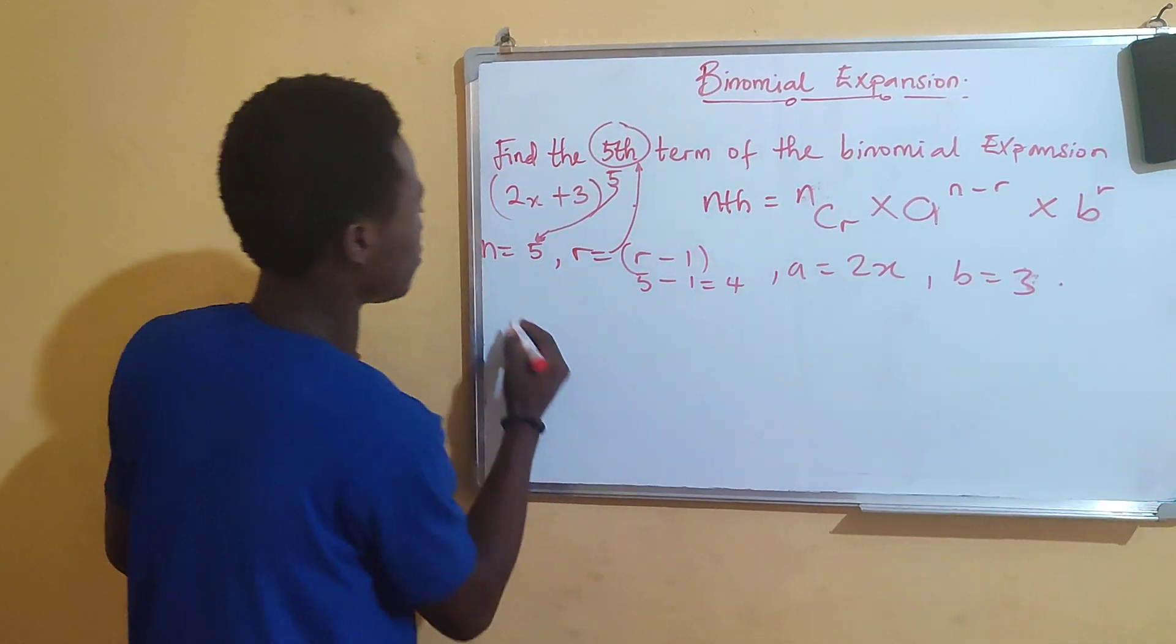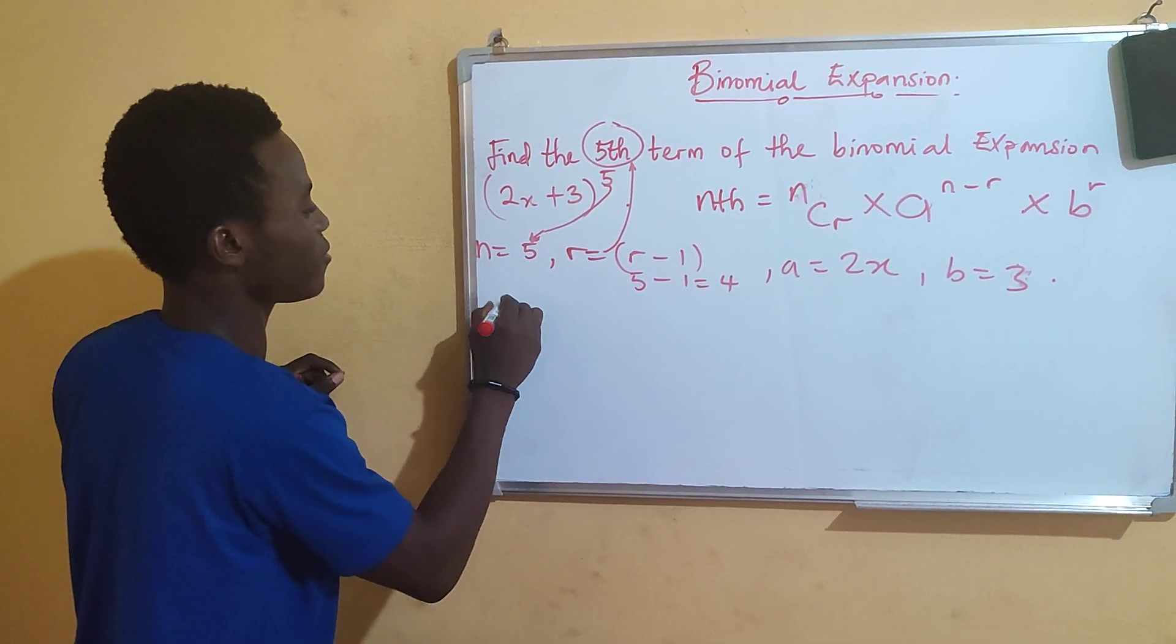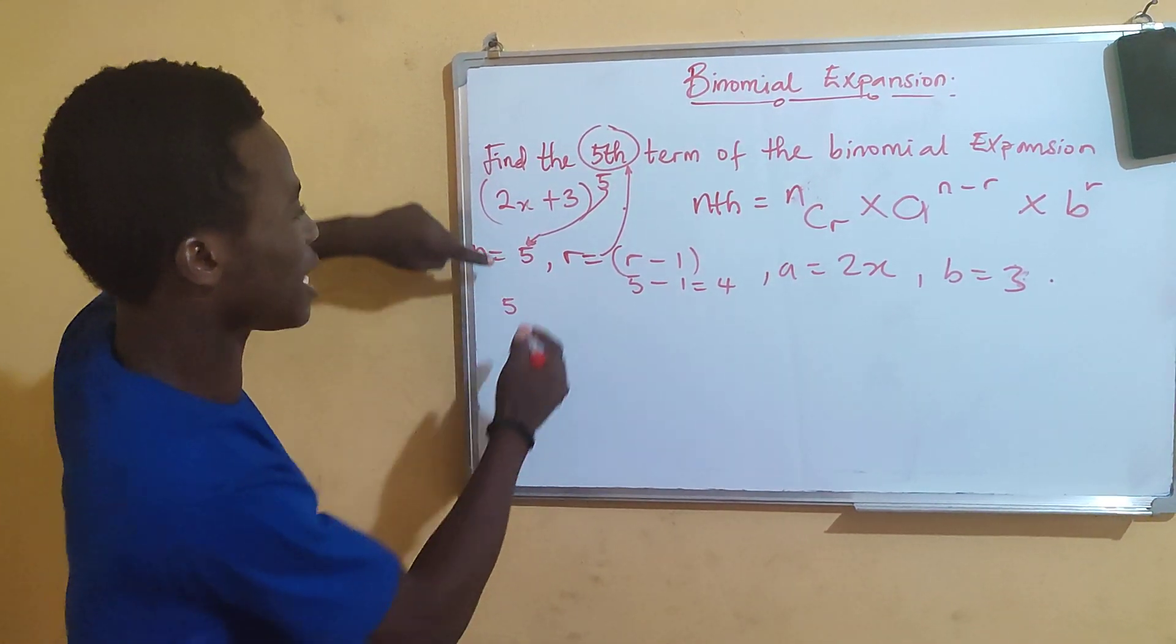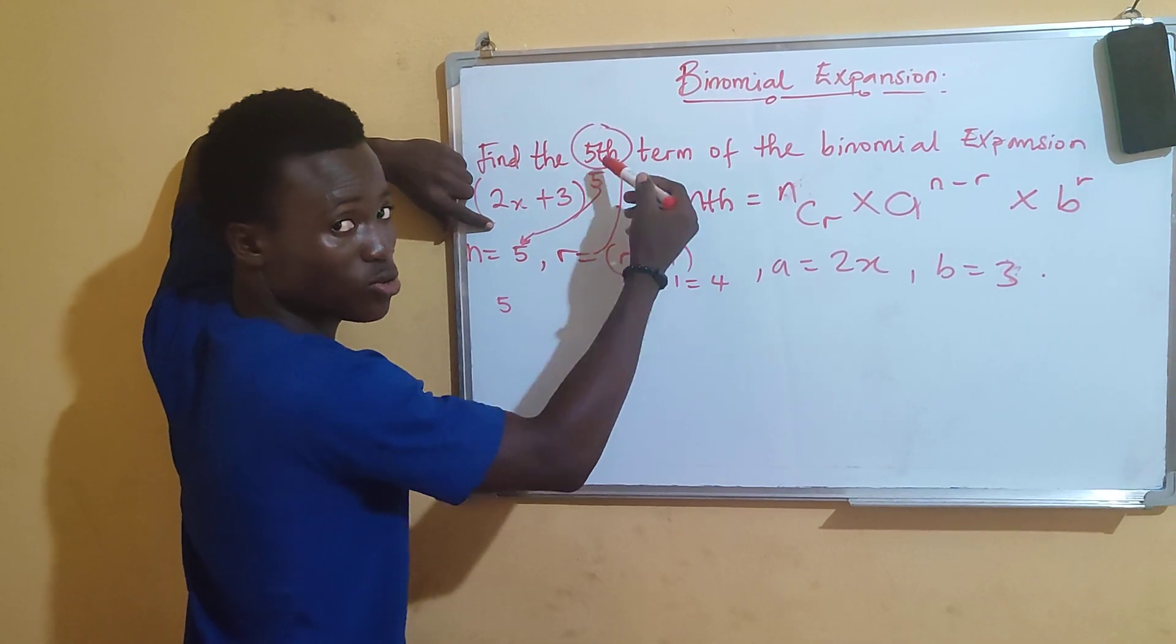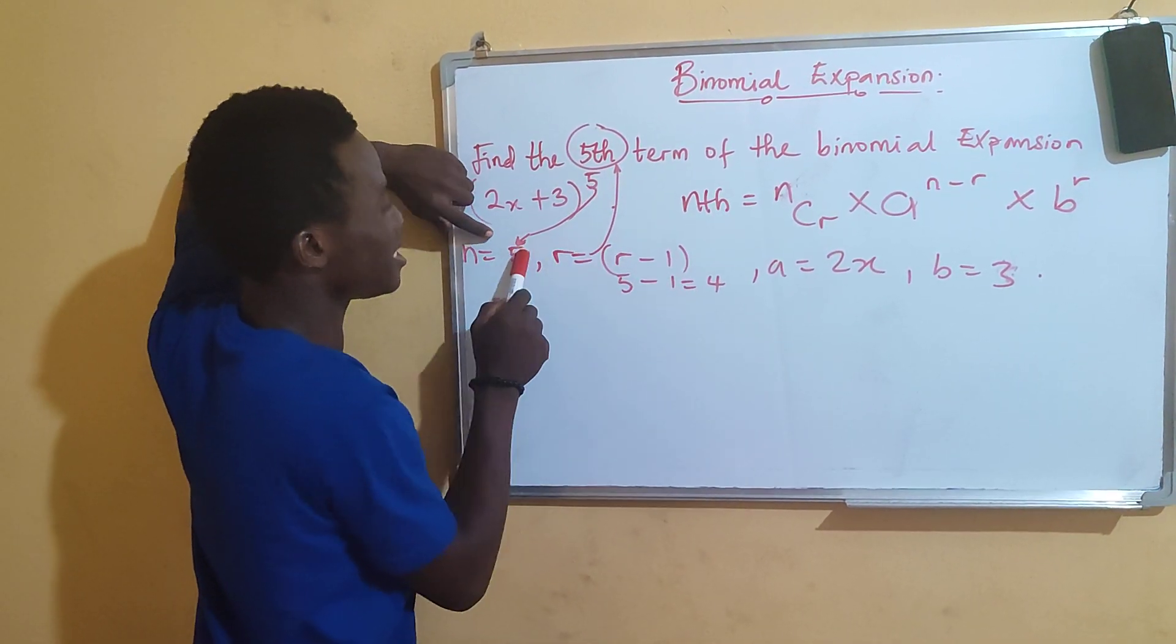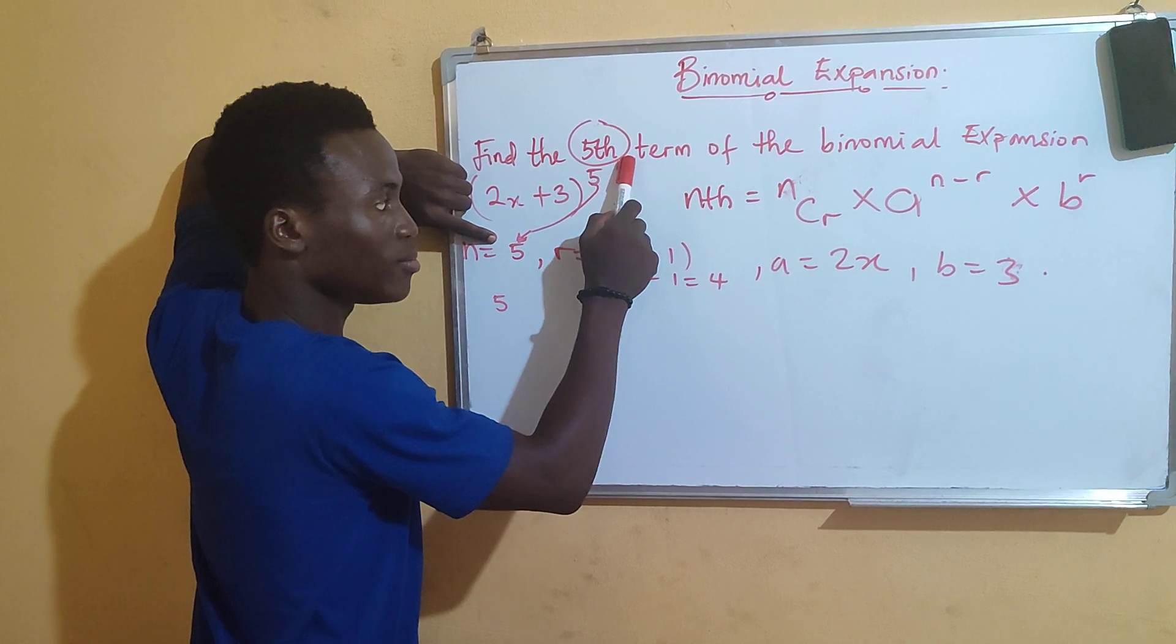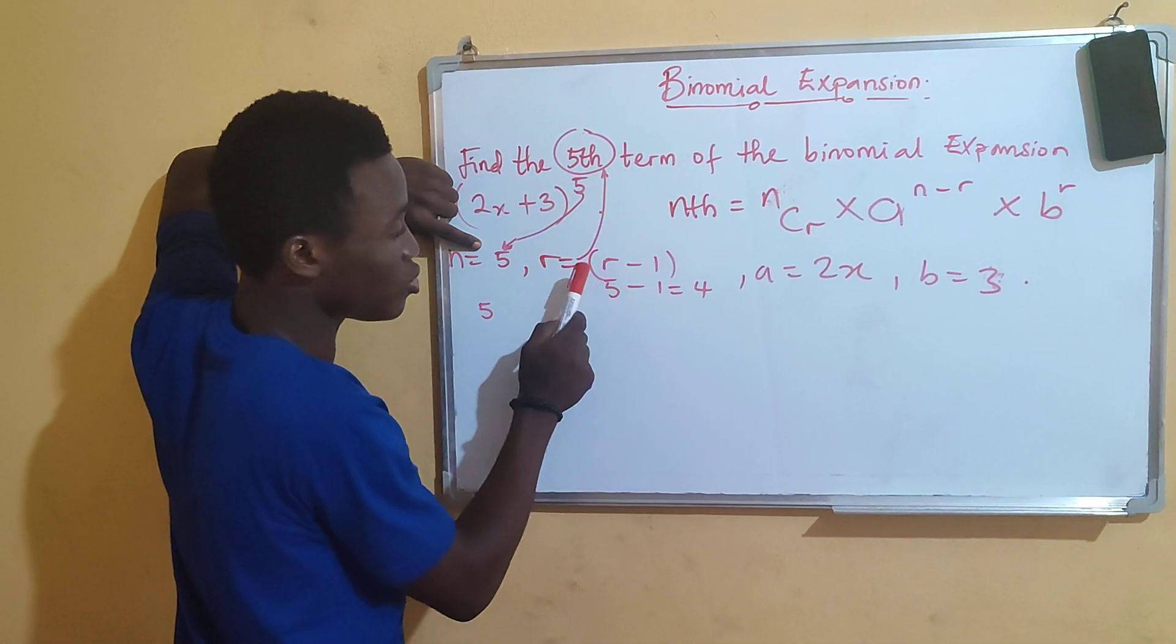Now we can now apply the formula. n is 5. Please, don't make mistake. Look at the arrow for you to differentiate between the two. The power is the n. Then the term, the nth term we are asked to find is your r.